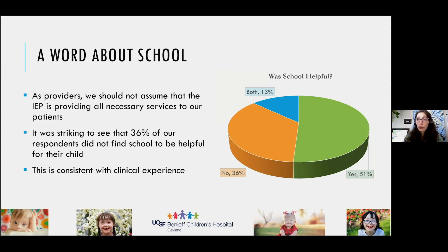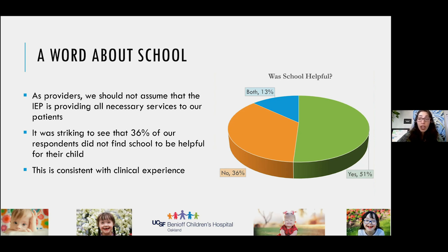A word about school: we asked our respondents whether school was helpful, and over a third said flat out no. Why? IEPs need to be truly individualized, and not all districts and not all IEPs truly support the needs of a child with a dual diagnosis. As providers, we can't assume that just because someone has an IEP they're being appropriately served.